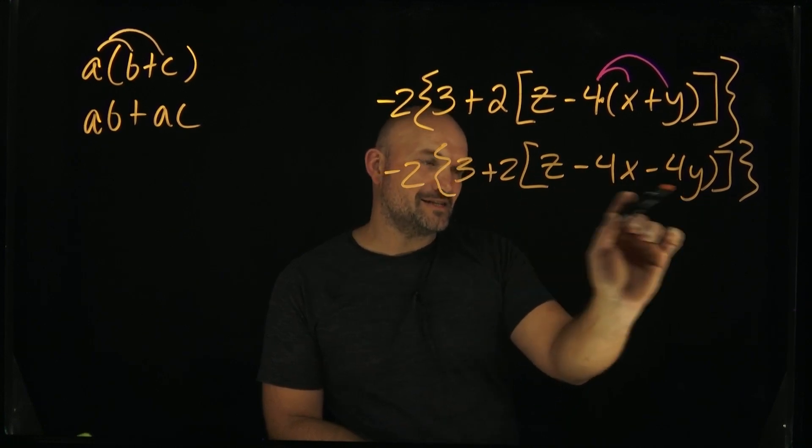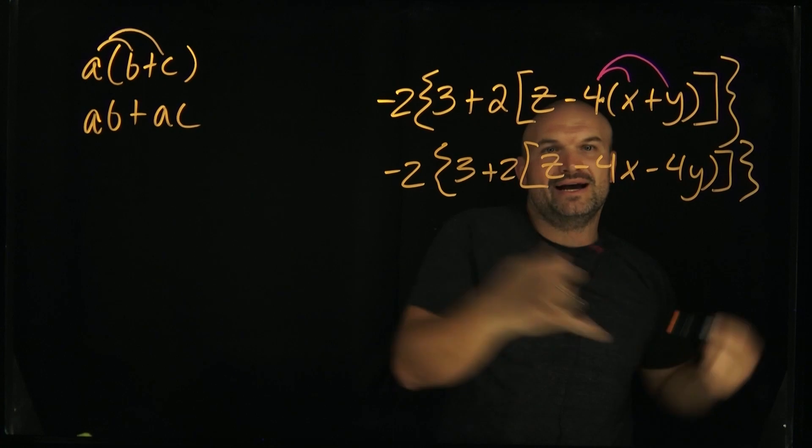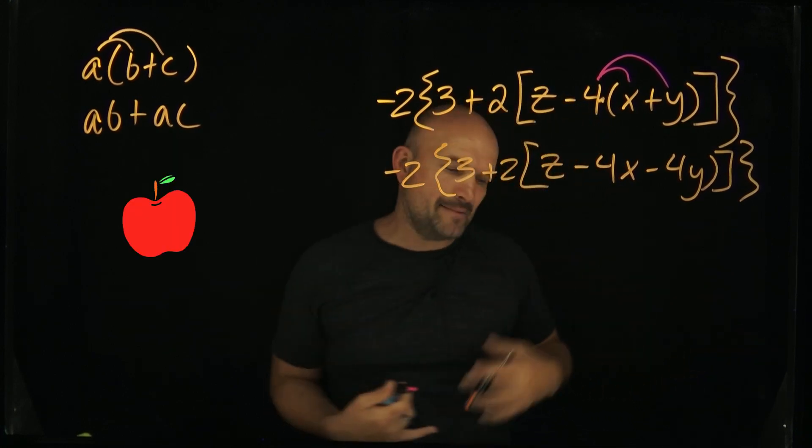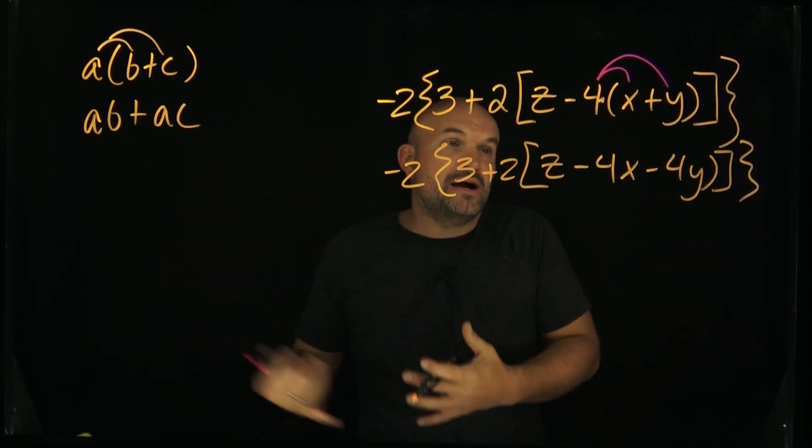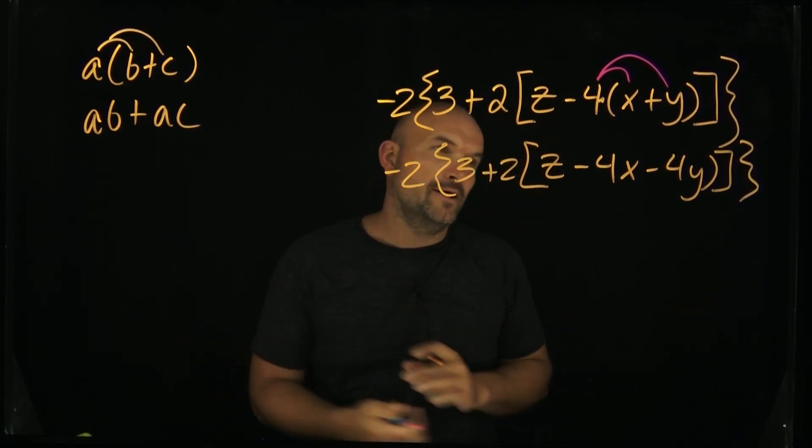So now let's look inside this expression. Unfortunately, there's nothing I can combine. I have a C and x and y. Those are not like terms. That's like having an apple, an orange, and a banana. You could call them three fruit, but you can't say you have three apples, three bananas, or three oranges. They're all different.